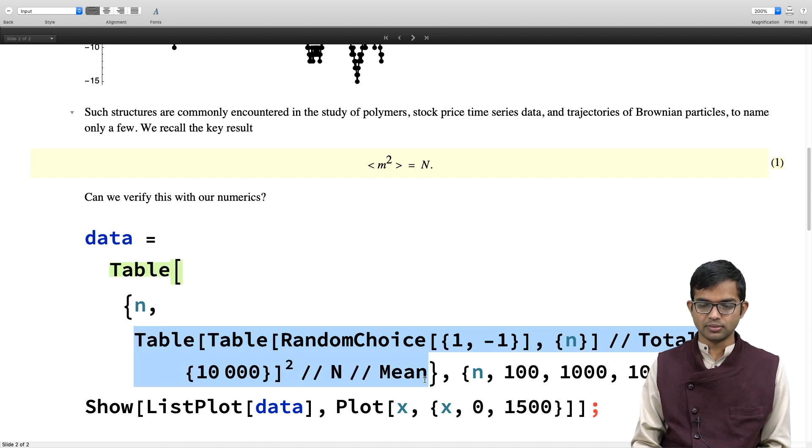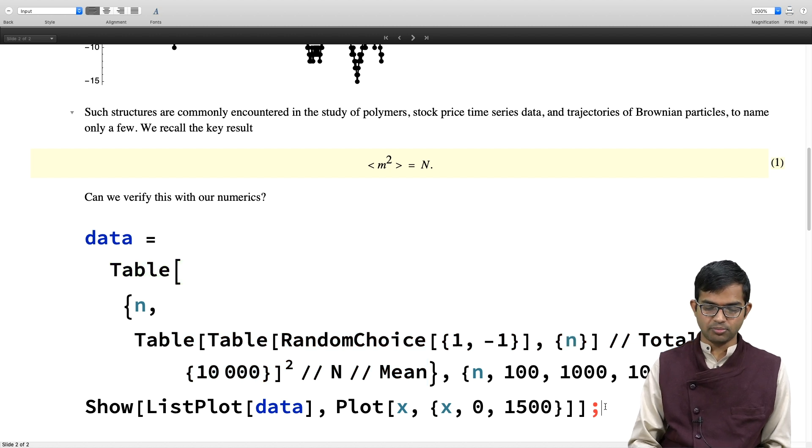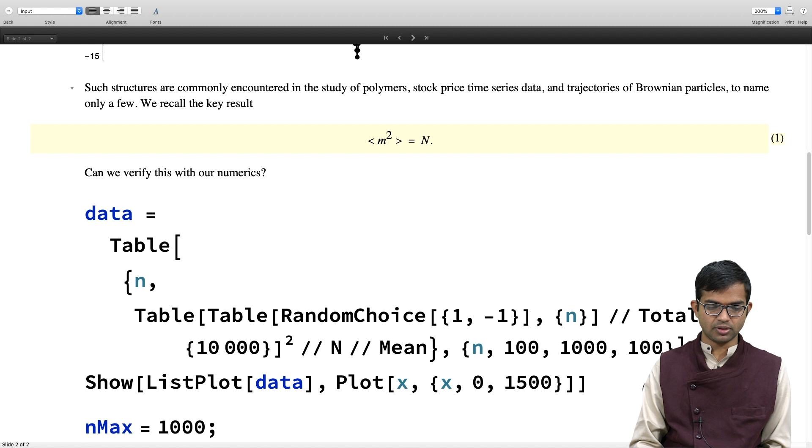I want you to take apart each part of this code and understand it for yourself. Finally, I'm making another table storing information about n and mean of m squared. This entire thing is just one number. This outermost table stores n and this big number, with n from 100 to 1000 in steps of 100. Finally, I just plot this.